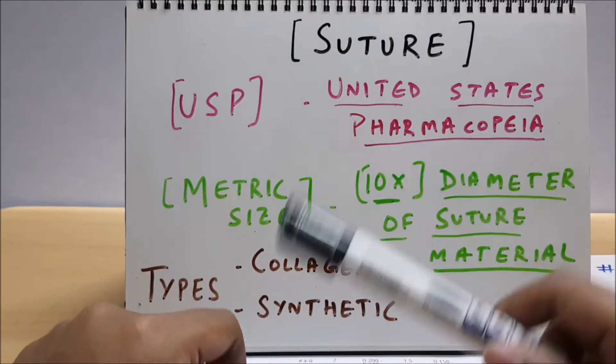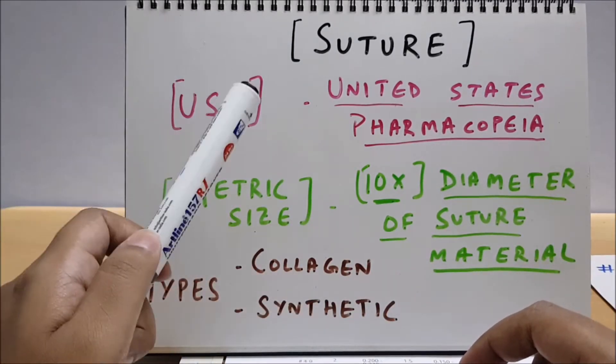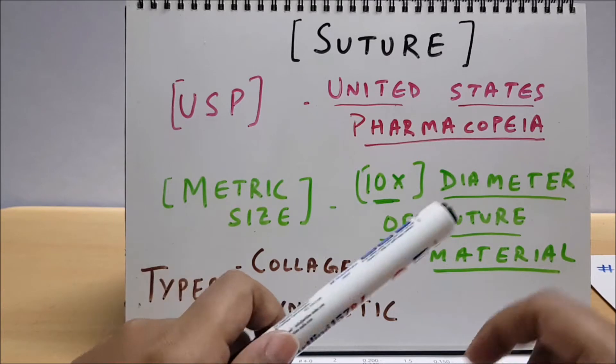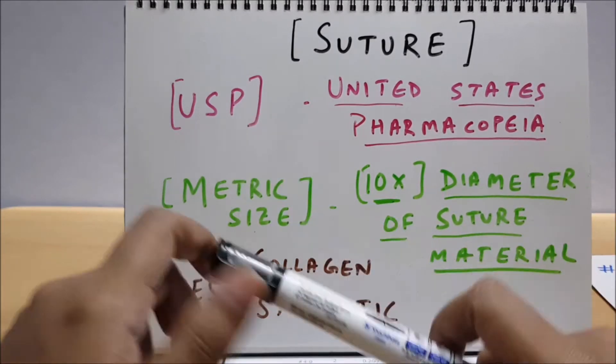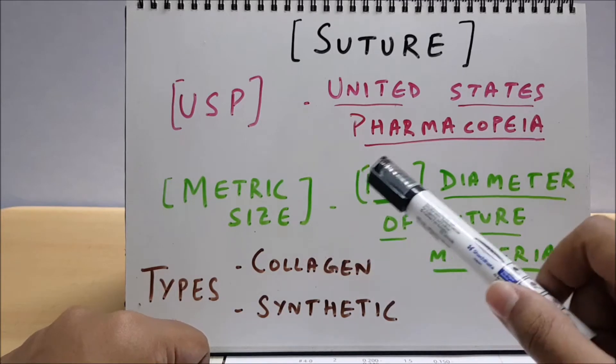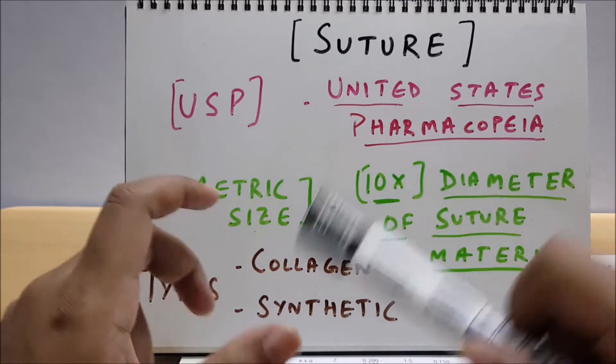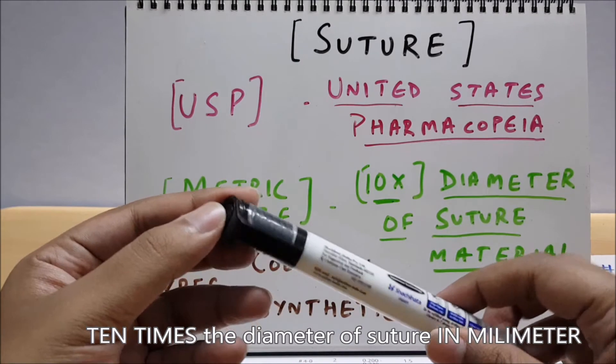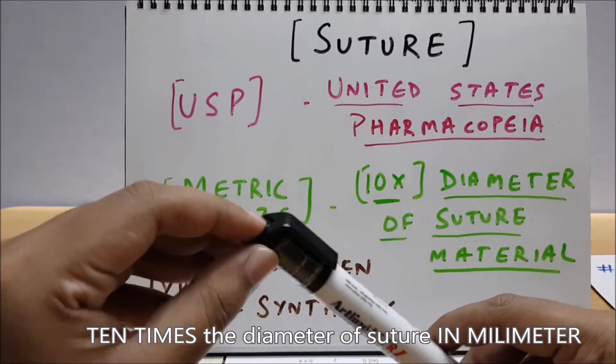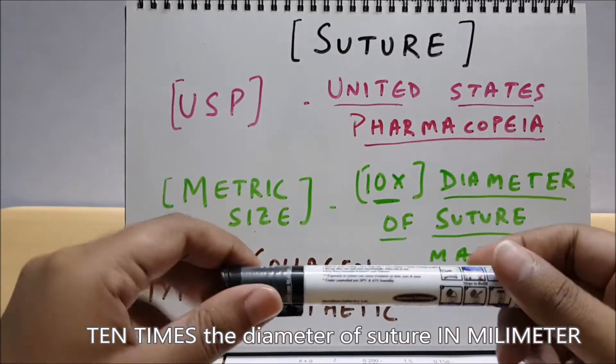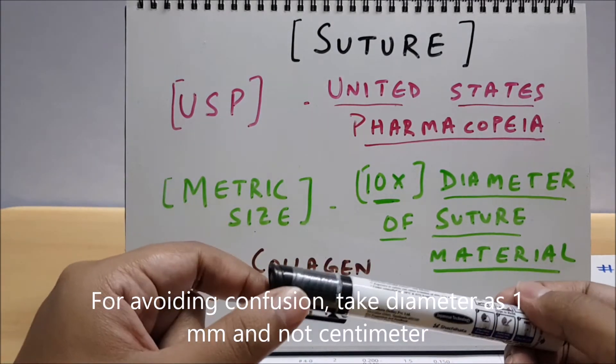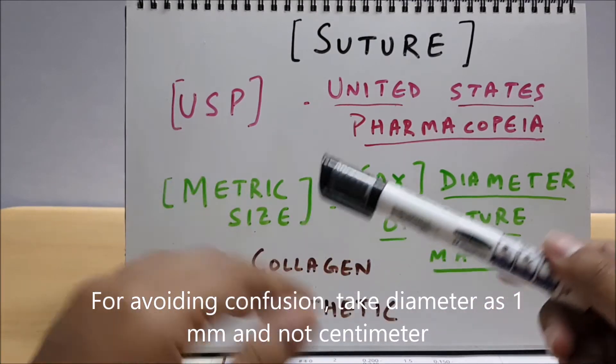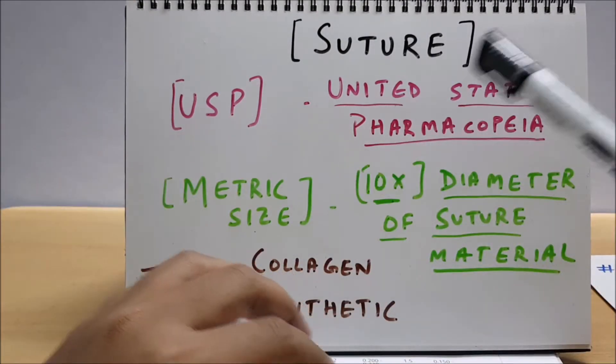USP - what is USP? It's United States Pharmacopeia. When you hear about 3-0, 4-0, 2-0, basically this terminology denotes USP. This is not metric size. What is metric size, friends? It is 10 times the diameter of suture material. For example, if the diameter of this suture is one centimeter, the metric size would be 10. But this is not some 10-0 if you're confusing - that is USP. Types: we have collagen and synthetic.